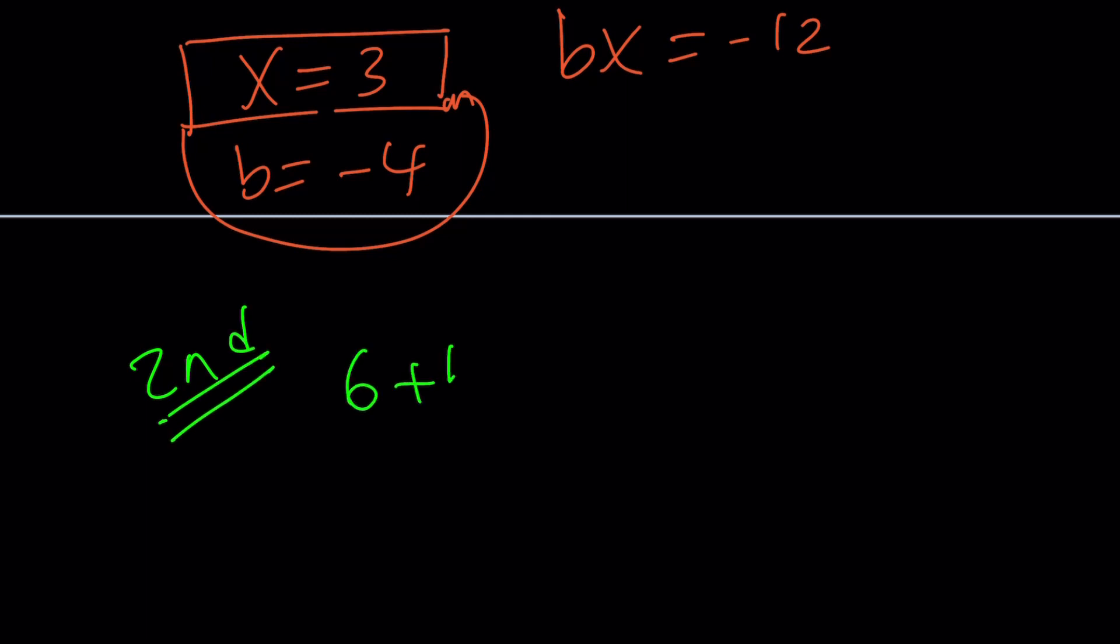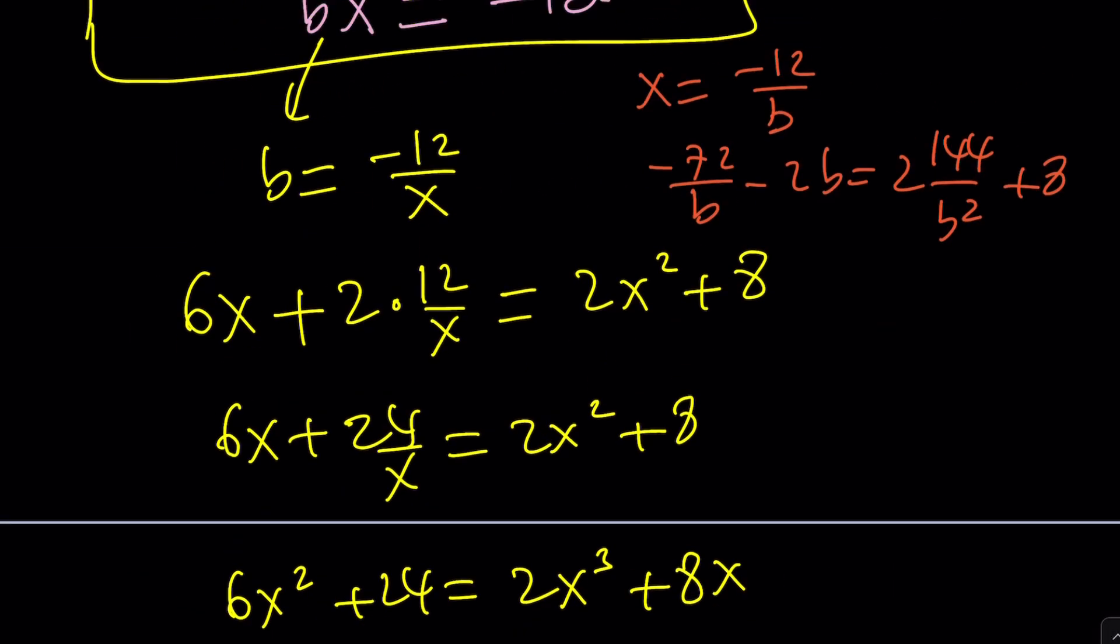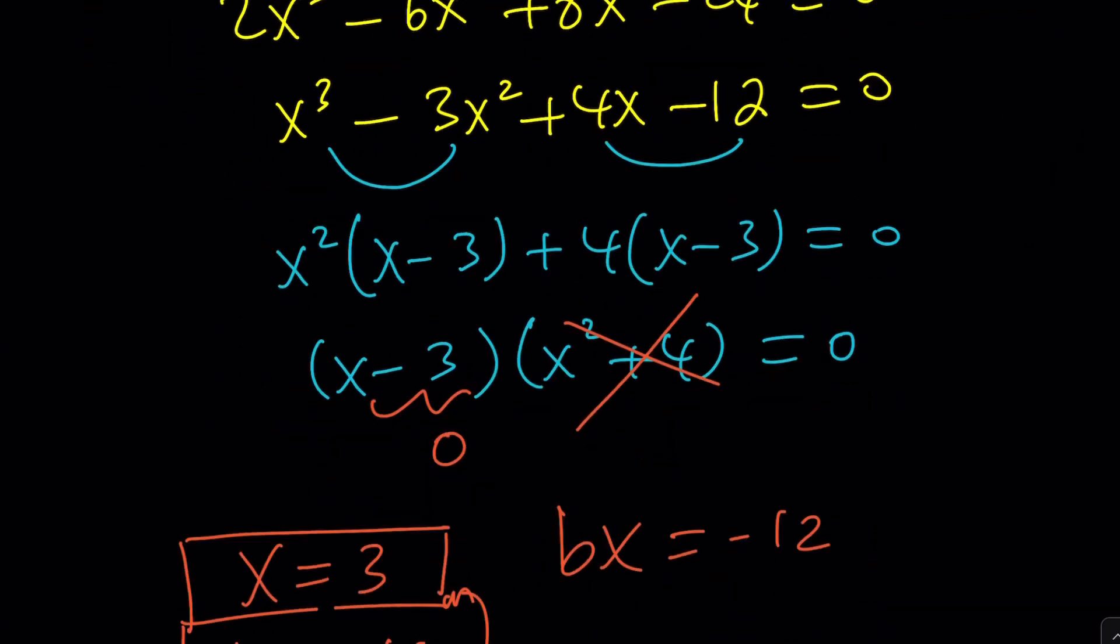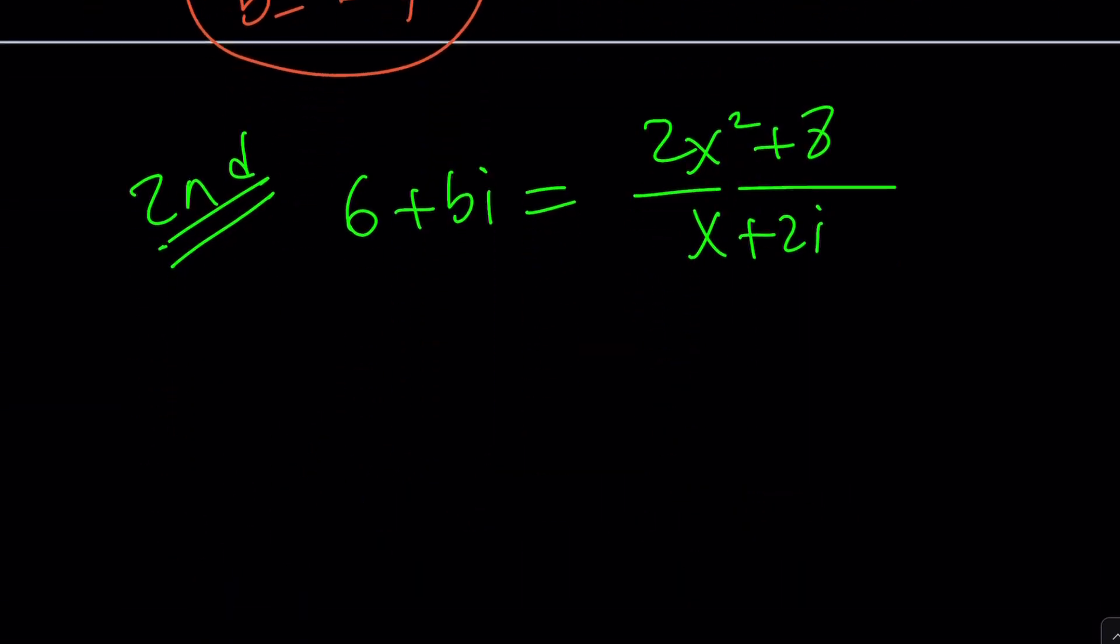So we have 6 plus bi equals 2x squared plus 8 divided by x plus 2i. Here's how the second method goes. As a third approach, you can multiply by the conjugate, but that's not what I'm going to do. Instead of multiplying by x minus 2i, I'm going to factor the numerator.